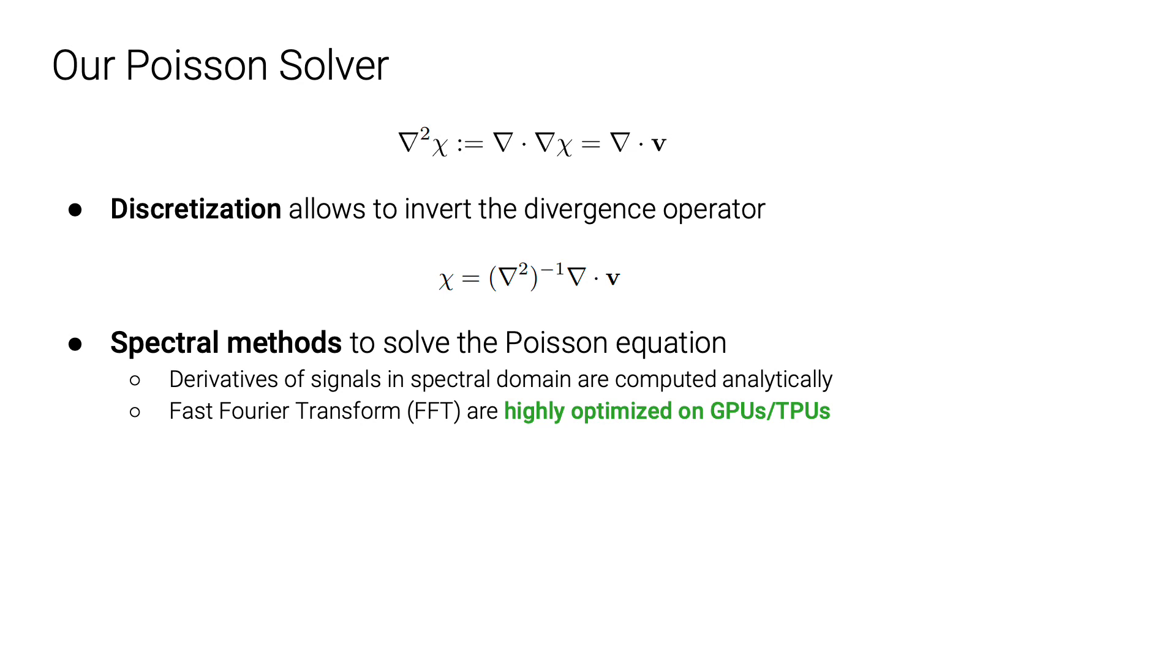A very important point is, spectral methods leverage the fast Fourier transform operations that are well supported for GPUs. Moreover, the solver itself is extremely simple and can be implemented in only 25 lines of code.